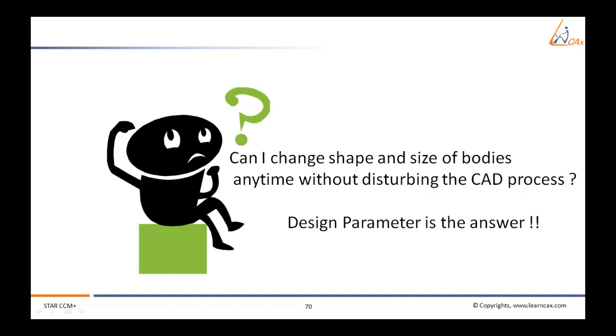But what if we have to randomly change the shape and size of already created body later on in the CFD process? This will disturb the body as well as all bodies which are related to the body to be modified. Can we somehow change an existing body or part on the go without affecting the entire CAD process?